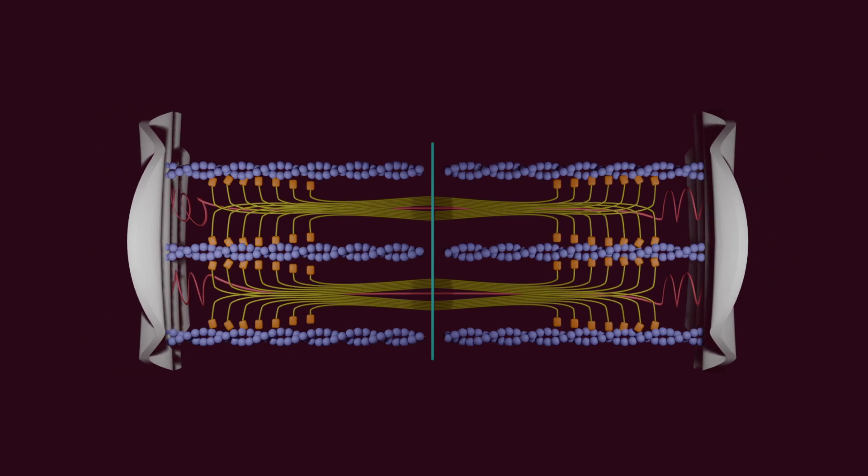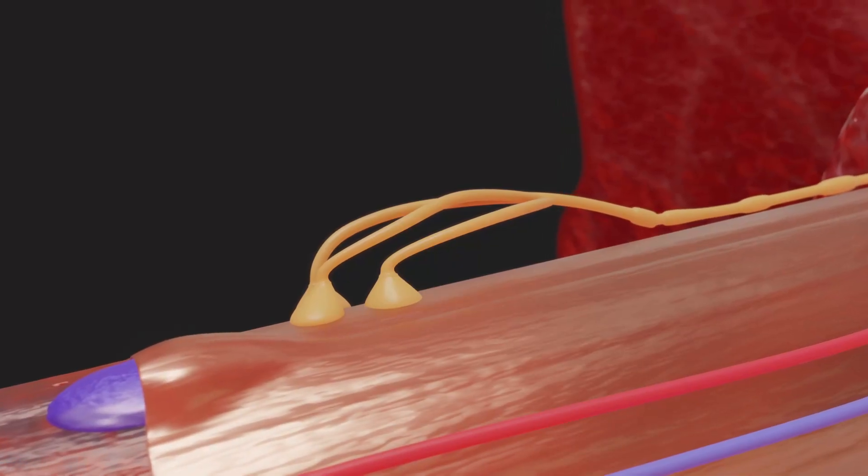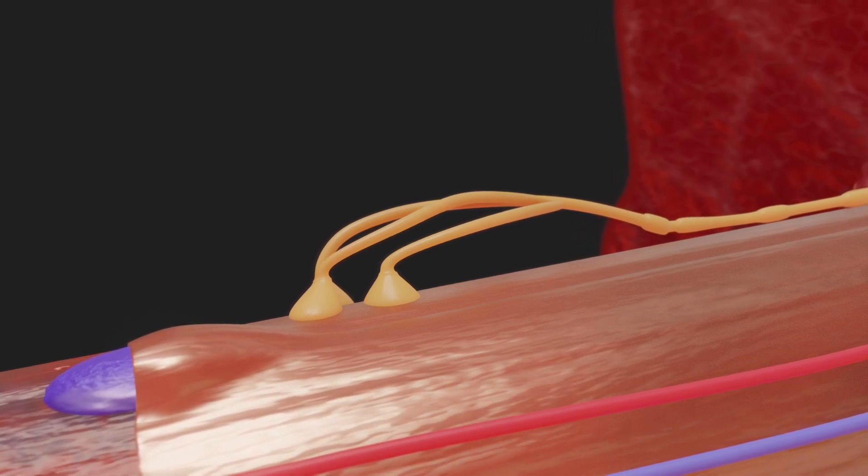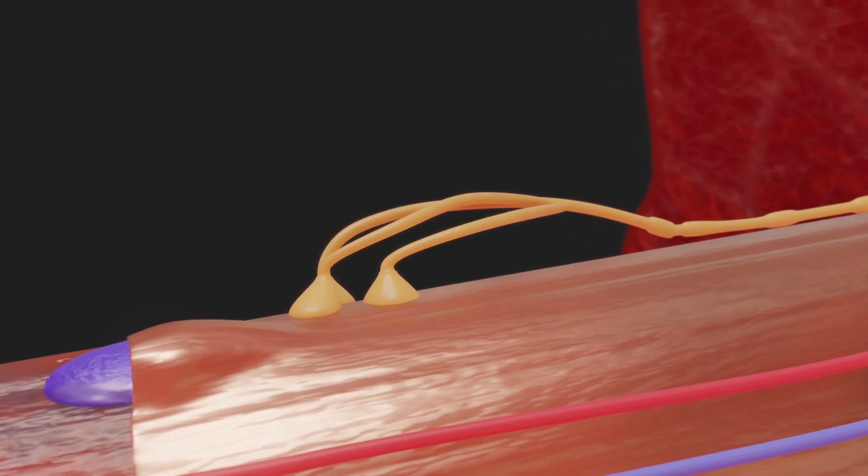Let's take a closer look at the muscle contraction process. The muscle fiber is excited via a motor neuron, and an electrical impulse spreads along the cell membrane.